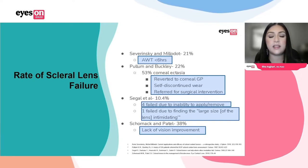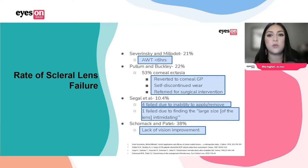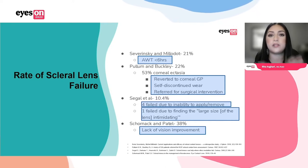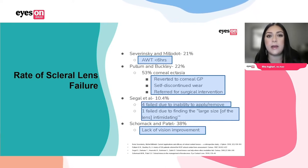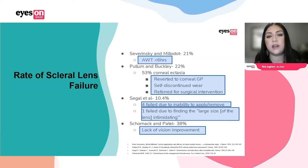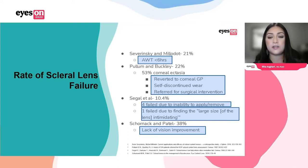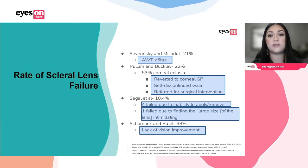Why such a big variable? Because what they defined as failure was different in every single one. In one study, if patients wore the lens for less than six hours, that was considered failure — the tolerance of wear was the metric. In another study, many patients reverted back to corneal GPs, self-discontinued wear, or were referred for surgical intervention.